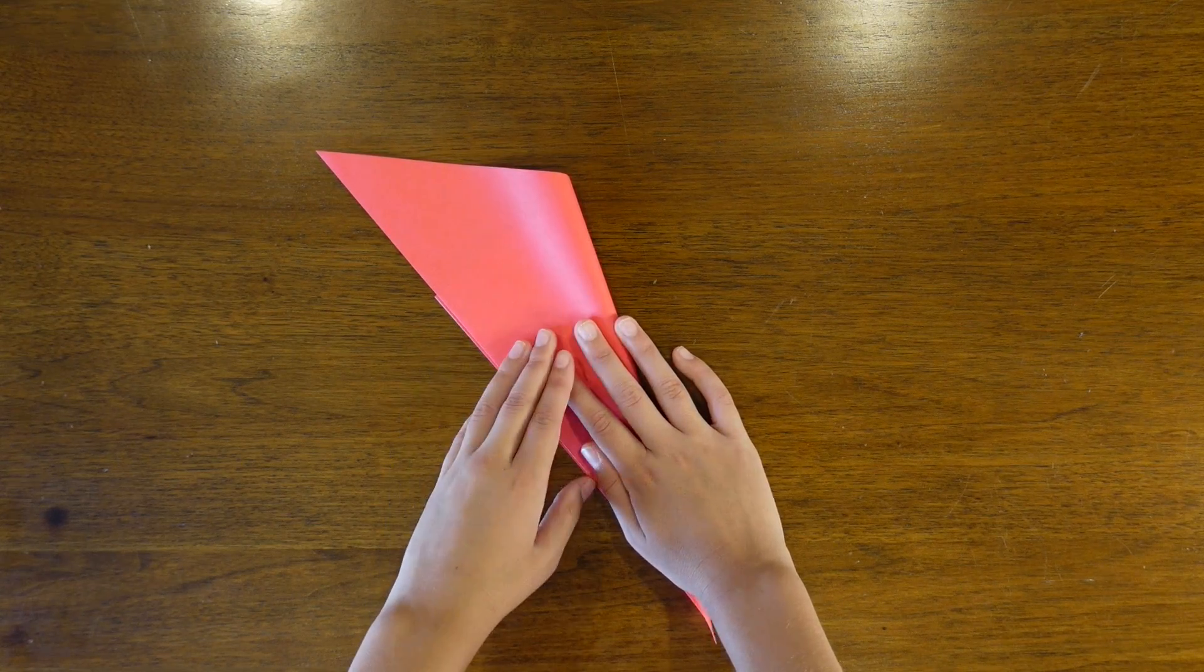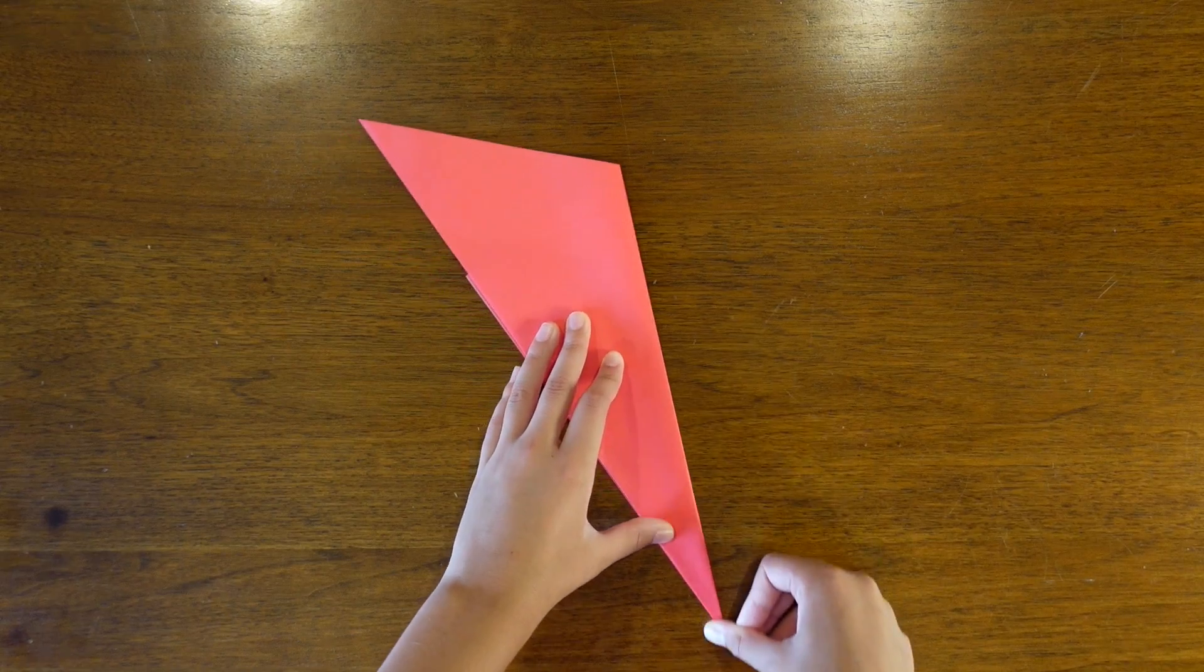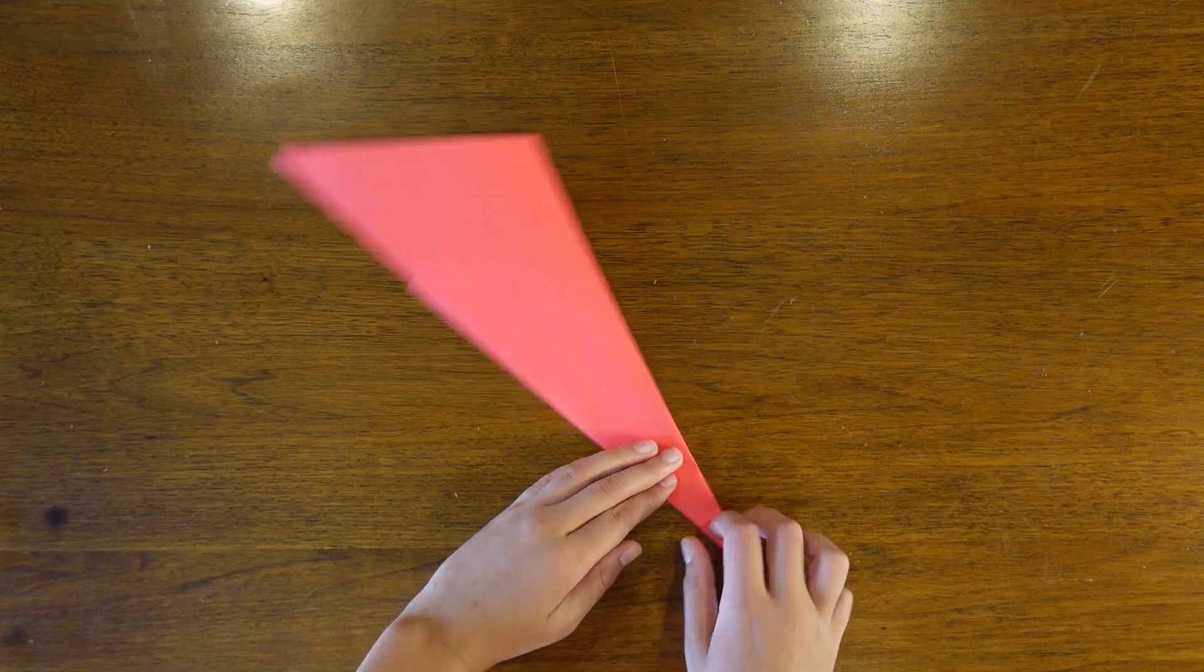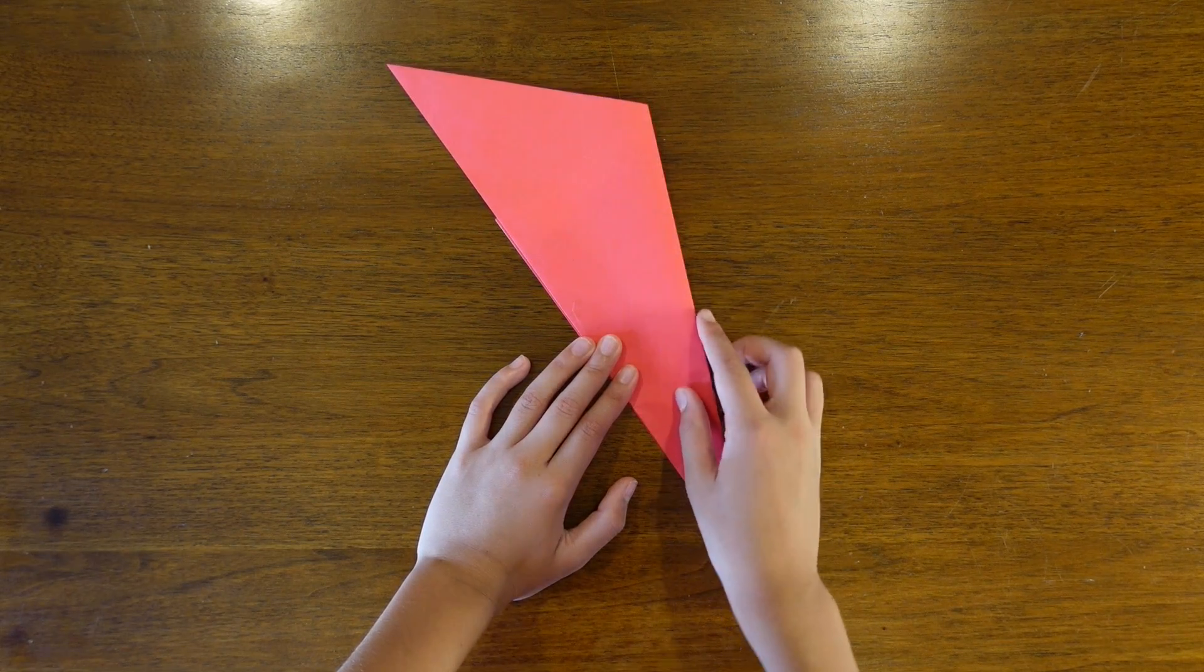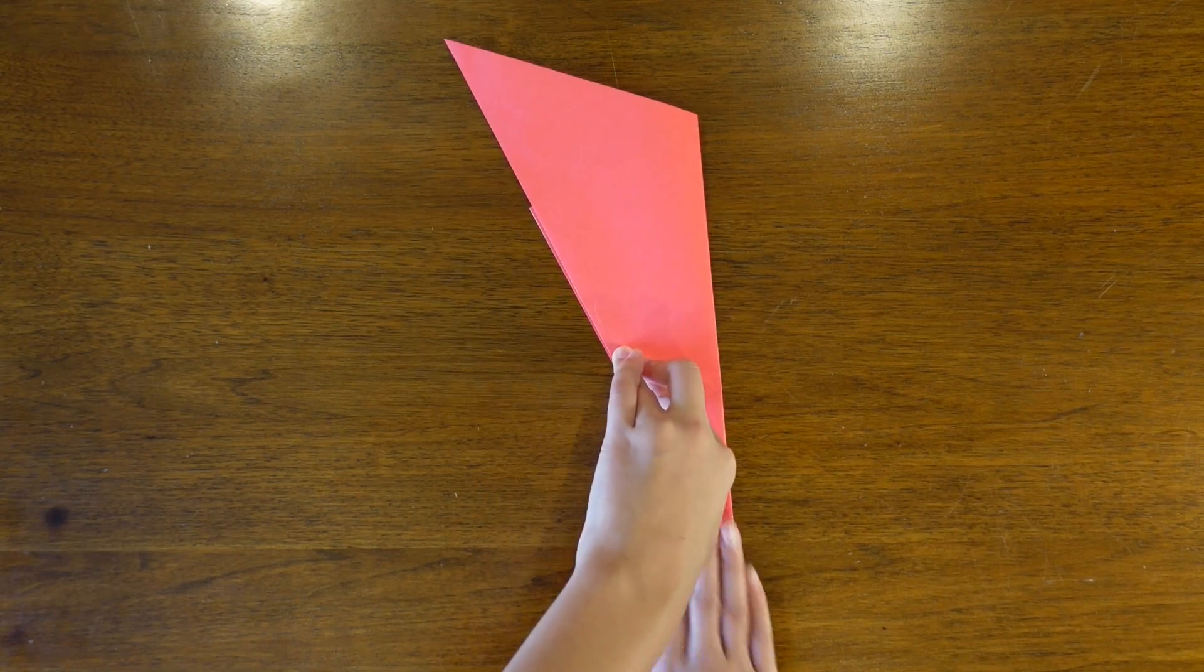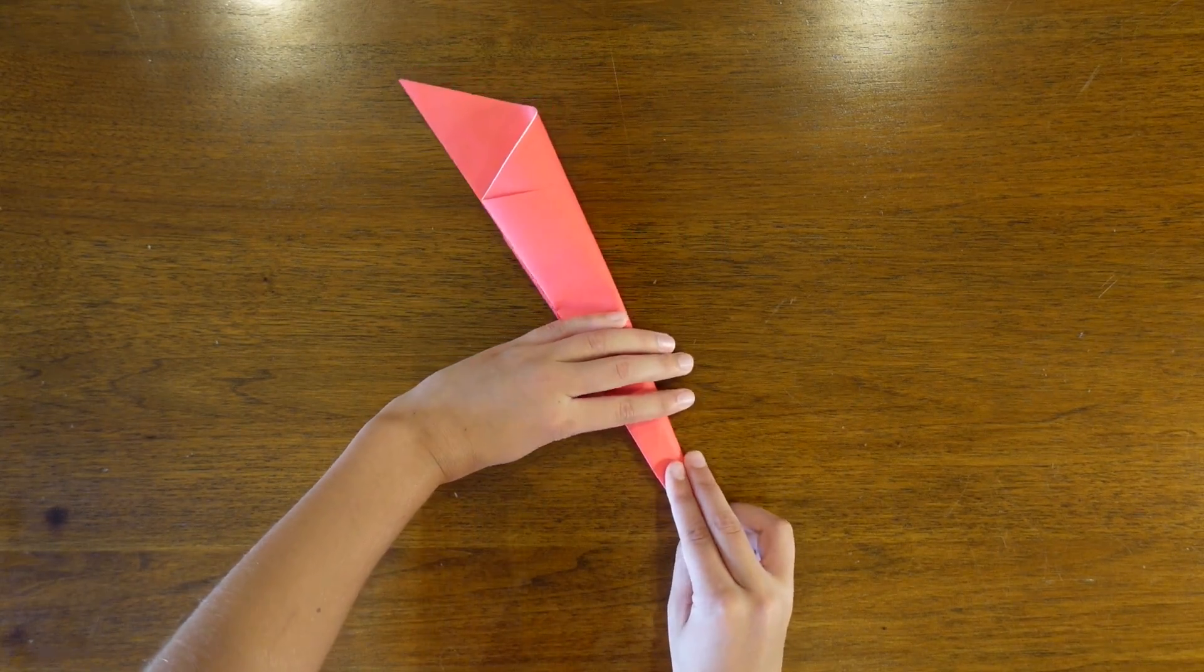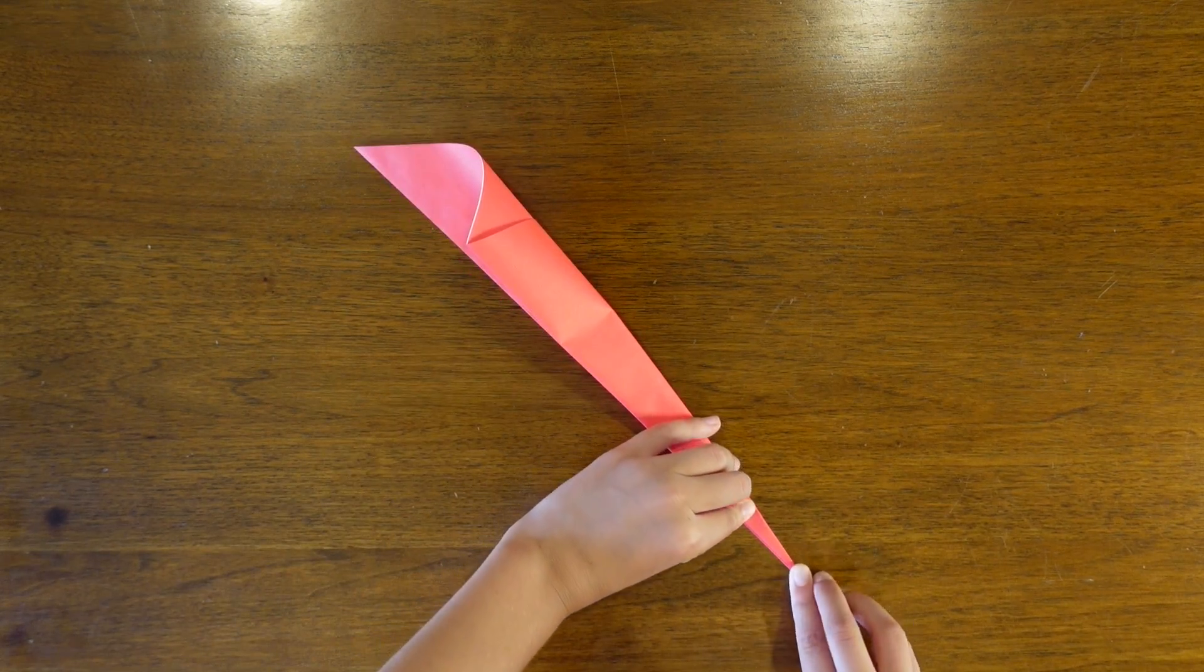Once you do that, you're going to, again, fold the edge to the opposite edge. This is a really cool model because it's the flame and the handle from one sheet of paper. And that's why this model stands out from a lot of other ones.